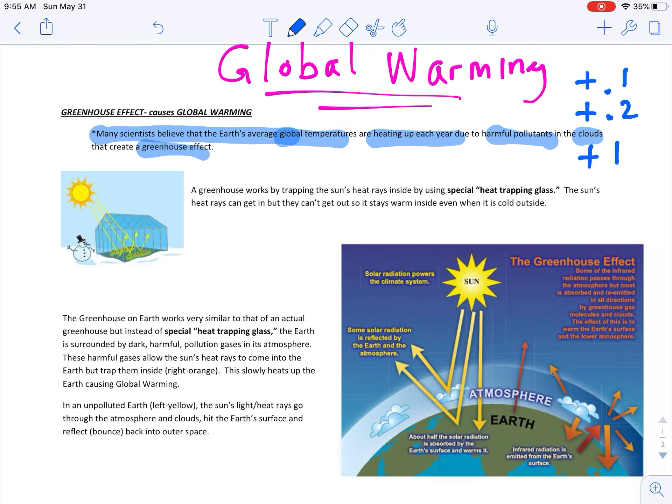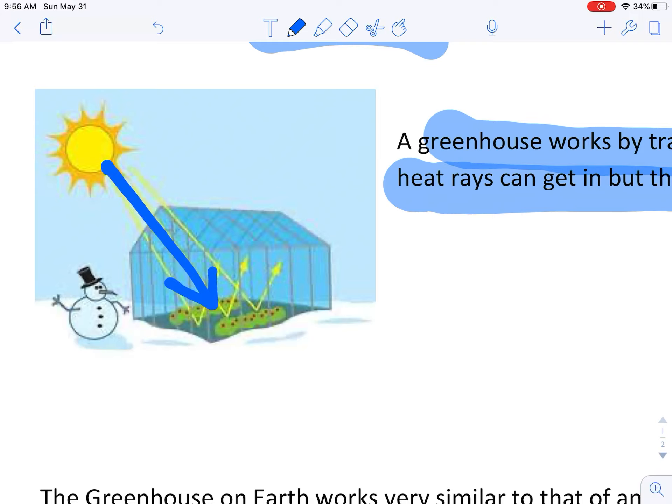So how does this occur? Because the earth works like a greenhouse. How does the greenhouse work? Well, a greenhouse traps the sun's heat by using special heat trapping glass. The sun's heat rays can get in, but they can't get out. And so it stays warm all the time. So looking at this picture, the sun's light and heat come into the greenhouse. It bounces around the greenhouse. But because of the special glass, the heat can't get out and it stays warm even in the wintertime. So that glass lets it in, lets the heat in, but does not let it out.